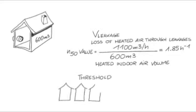For buildings with natural ventilation, the air change rate must not exceed 3 per hour. For buildings with a ventilation system, the air change rate must not exceed 1.5 per hour.